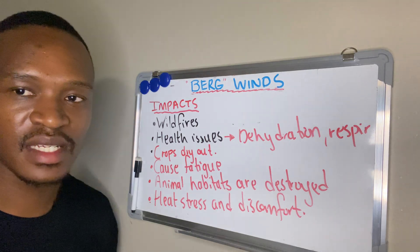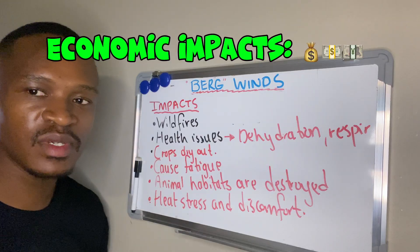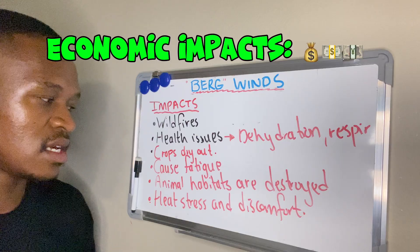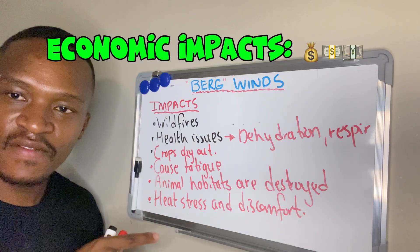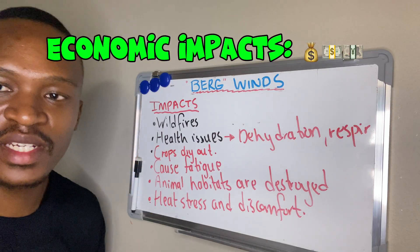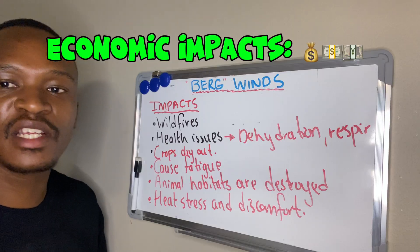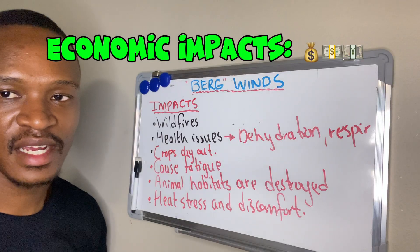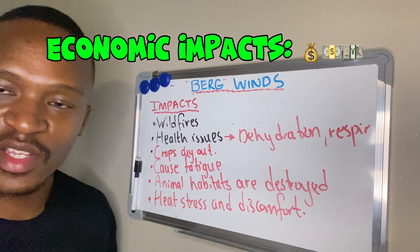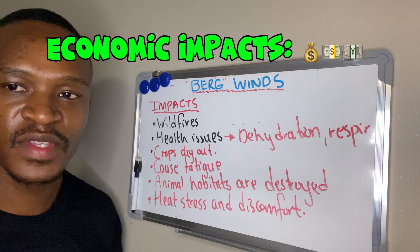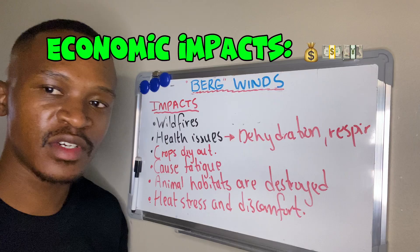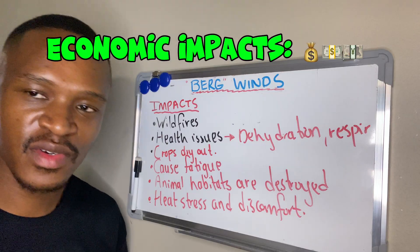For economic impacts, remember the answer should deal with money. Crops drying out means farmers make less profit. More fatigue means workers are tired and there is less production. Less production means fewer crops to sell, less trade, and farmers may lose their jobs — job loss is also an economic reason, as fewer people contribute to the economy.